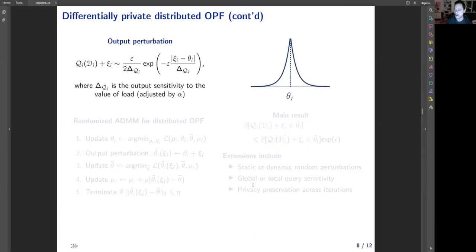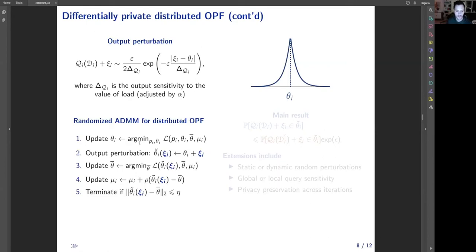Using output perturbation, we augment the voltage angles computed by every subproblem with random noise that follows Laplace distribution and is parameterized by sensitivity of the subproblem to load dataset and epsilon parameter, such that the output of every subproblem is now given by a certain Laplace distribution. The randomized version of ADMM algorithm now looks as follows: voltage angles are updated by every subproblem, then augmented with carefully calibrated noise, and then consensus and dual variables are updated using the noisy voltage updates. The algorithm terminates when the distance between noisy updates and consensus variables is below a certain threshold.